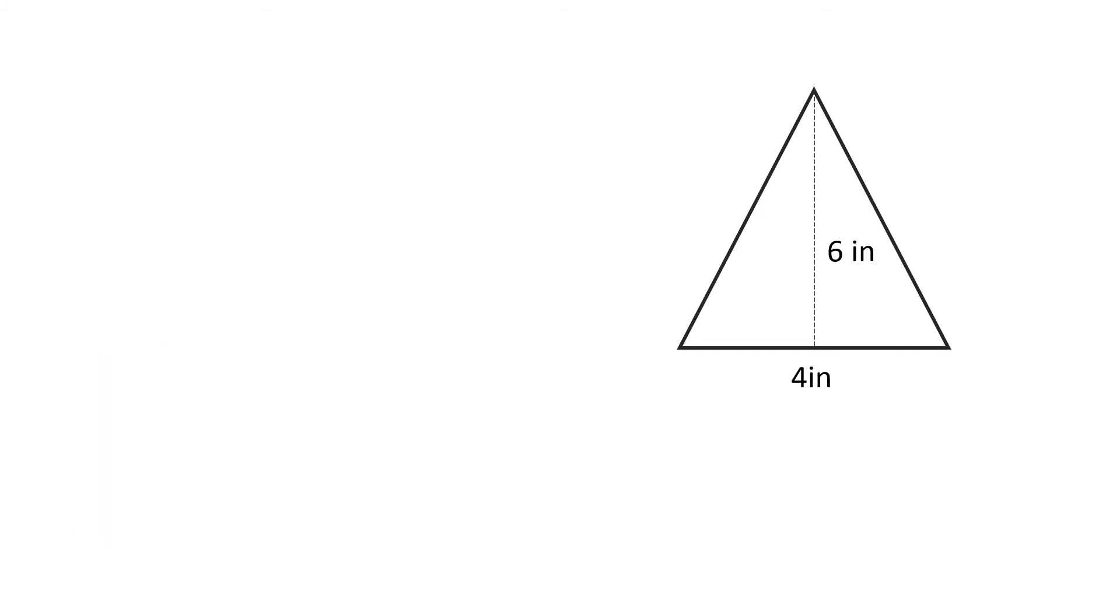The first thing we do is write out the formula: area equals one-half times base times height. Base times height is in parentheses, which means we will do those first.